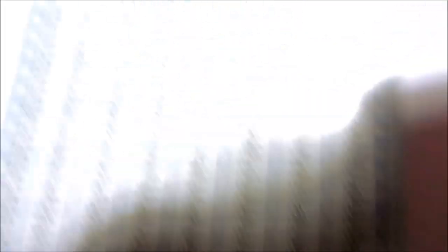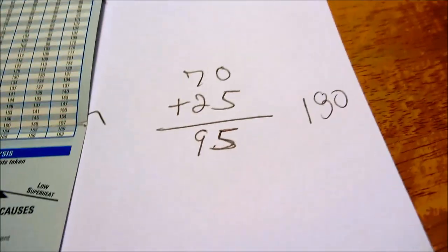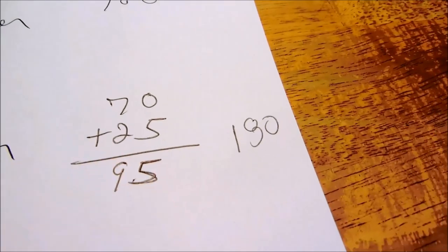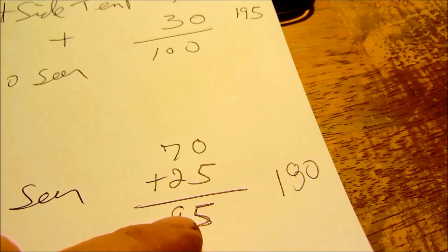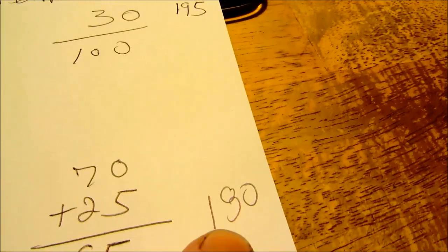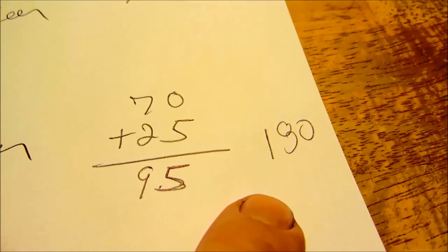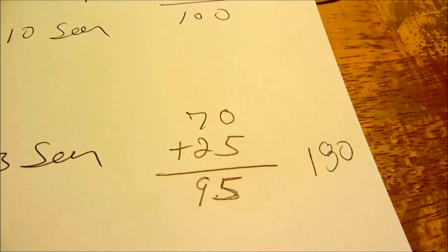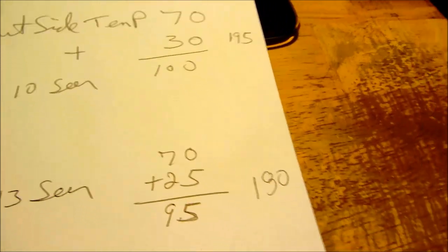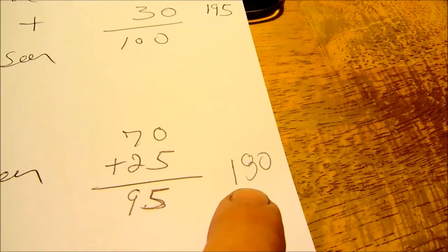That's 180 PSI. On a 70 degree day, a 13 SEER is going to have more capability in the condensing unit so it's going to be a lower head pressure. That's what you shoot for but that's not always carved in stone.